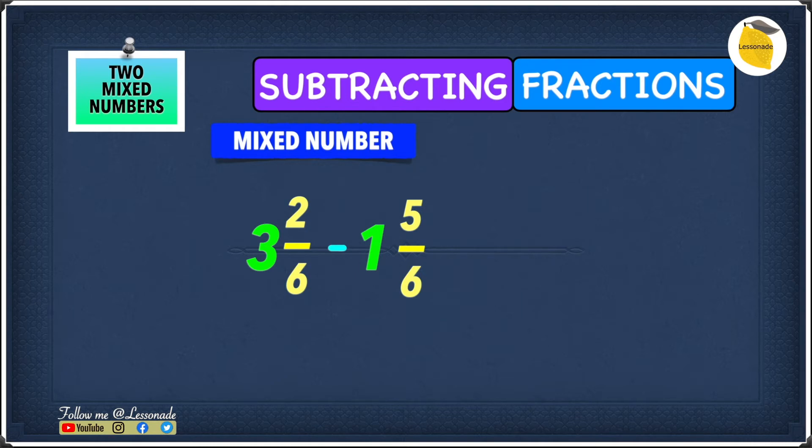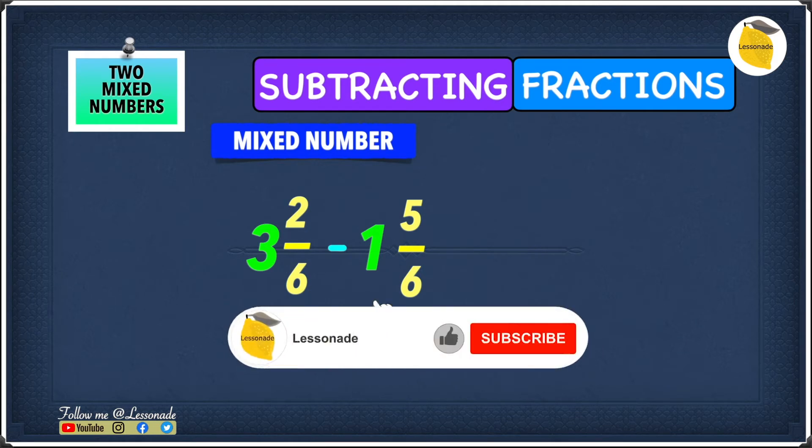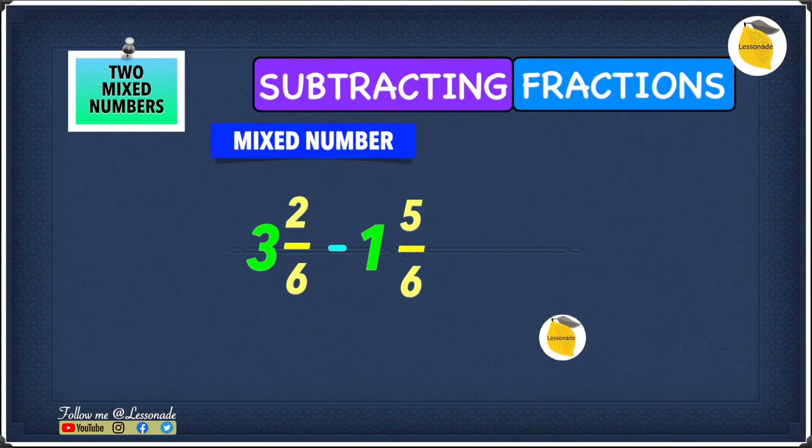Because in the previous method, we subtracted the whole numbers, and then we subtract the fraction. Let's say we subtracted the whole numbers, and then we move on to the fraction. But when you move on to the fraction, you can see that we have to do 2 minus 5. And 2 minus 5 gives you minus 3. The last thing we want is a negative number. So this means we're not going to use the previous method, and we're going to use something else.